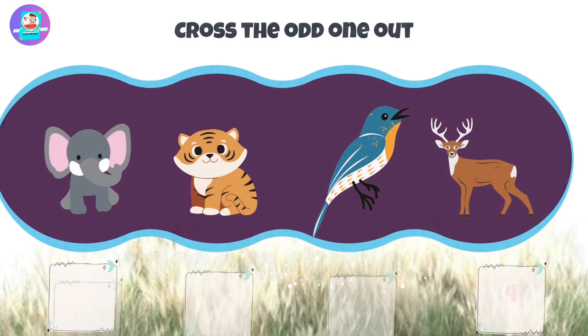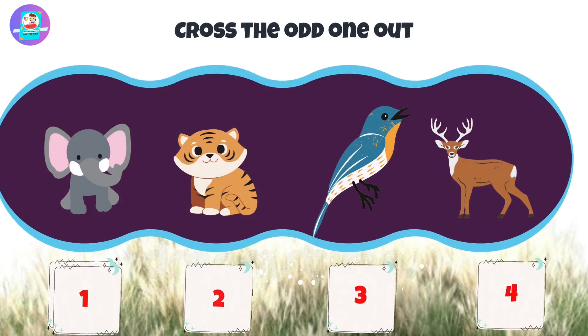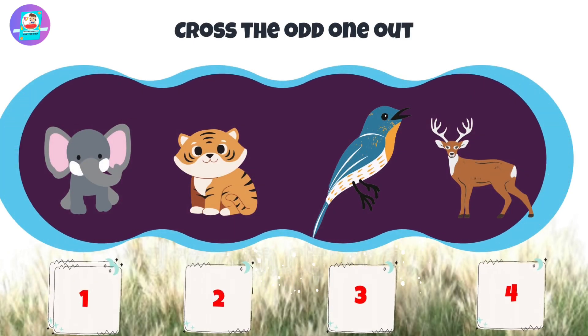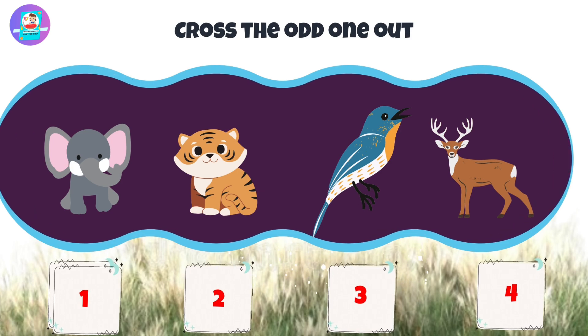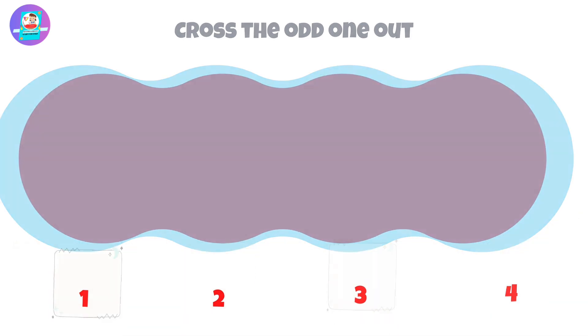Okay, next, there are 4 pictures: 1, 2, 3, 4. Put the odd one out.